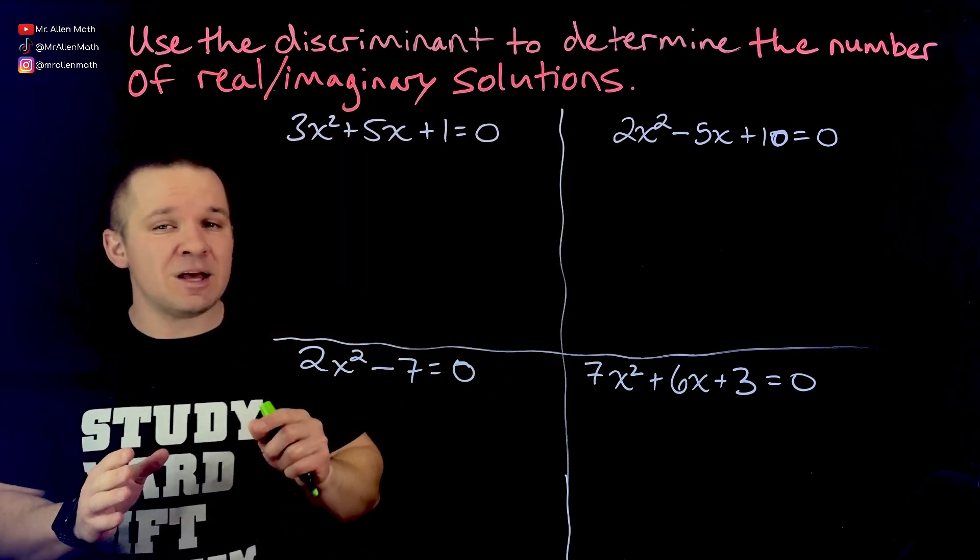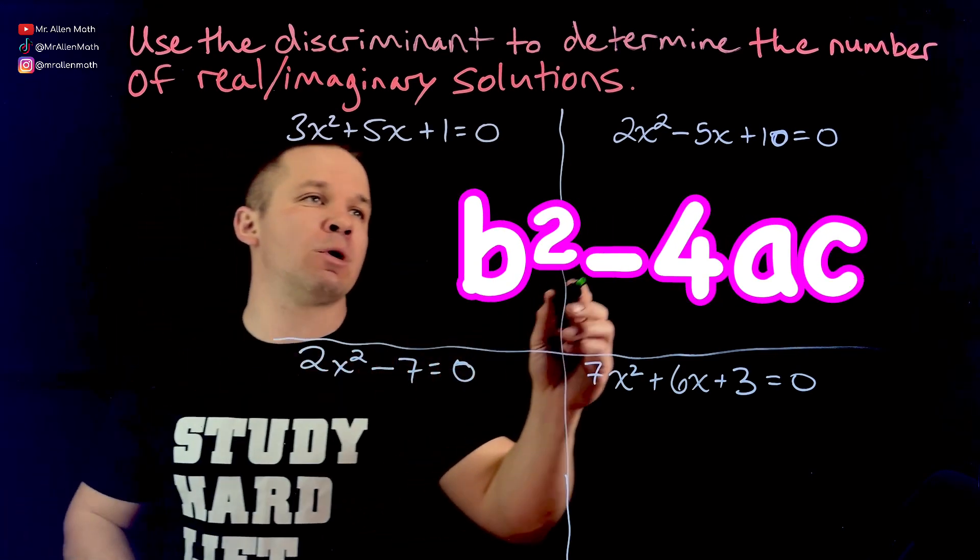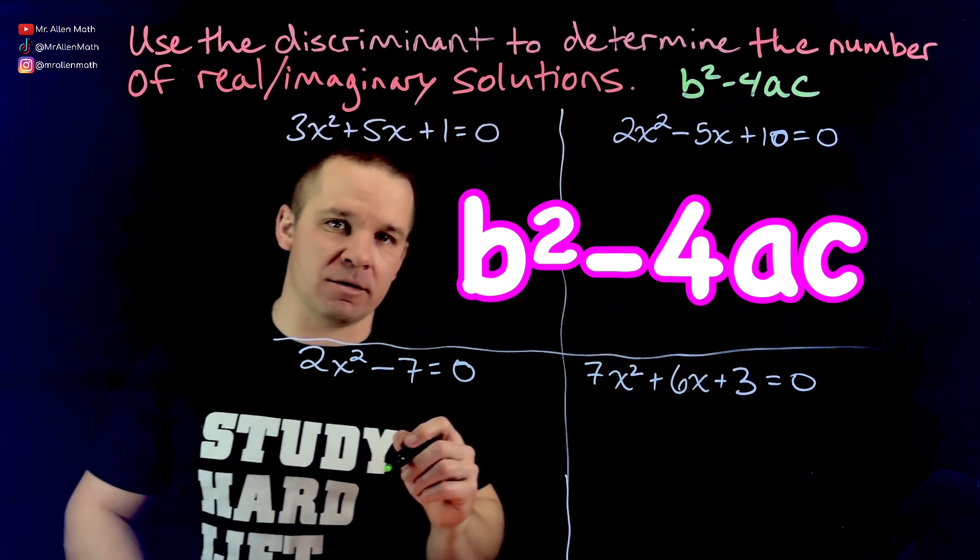Well, the discriminant is that part of the quadratic formula, the part that's inside of the square root. It's the B squared minus 4AC part.